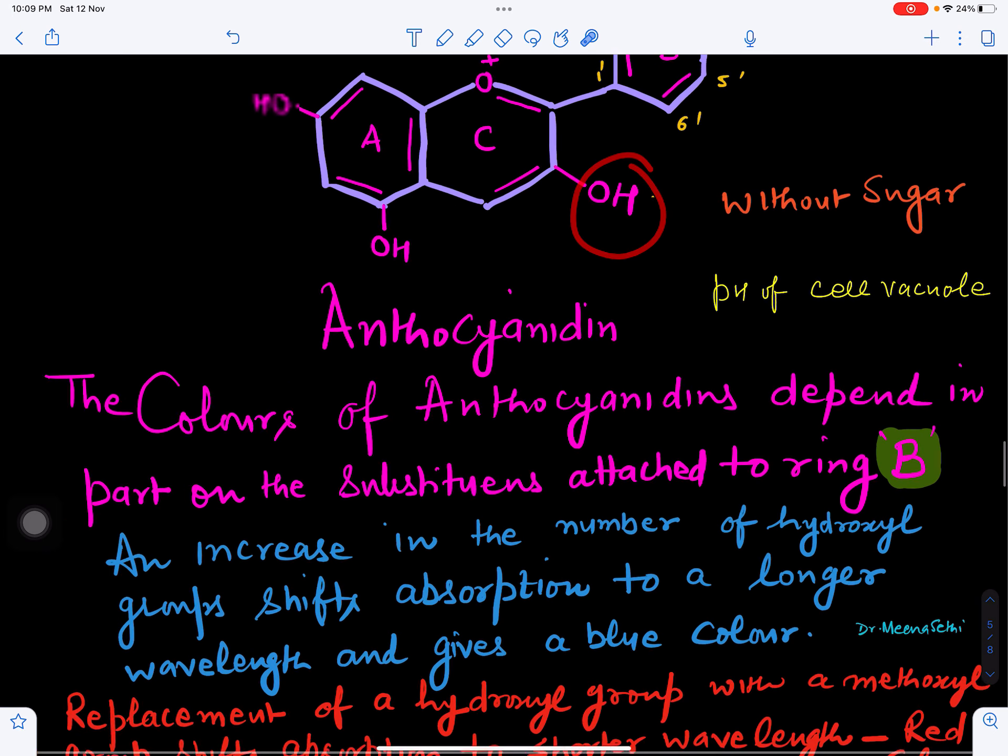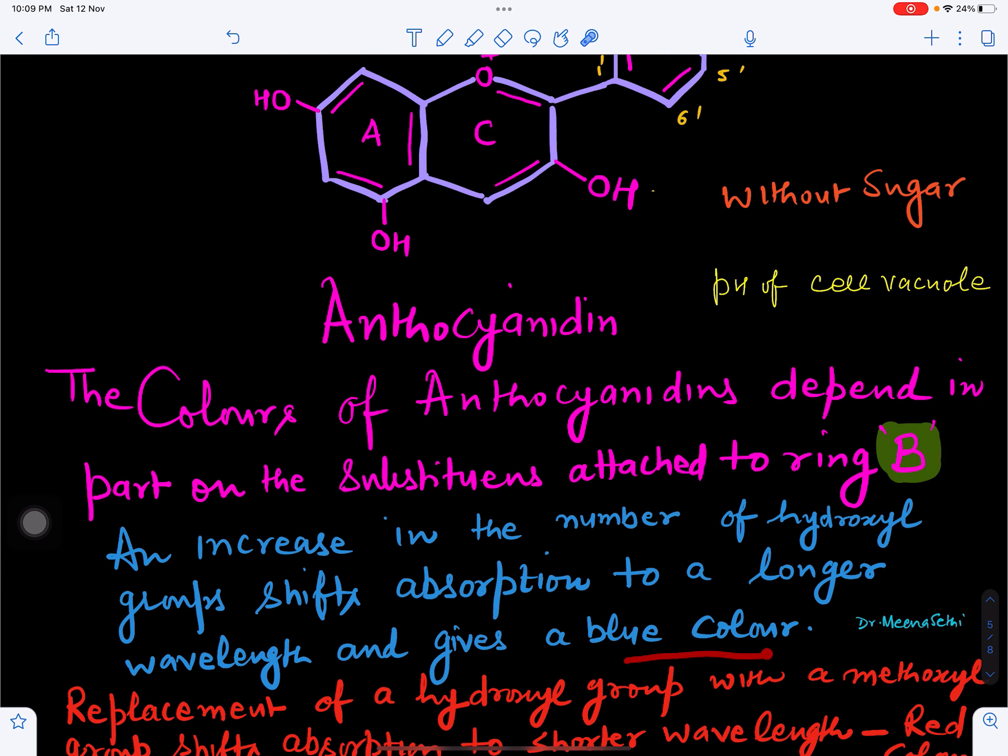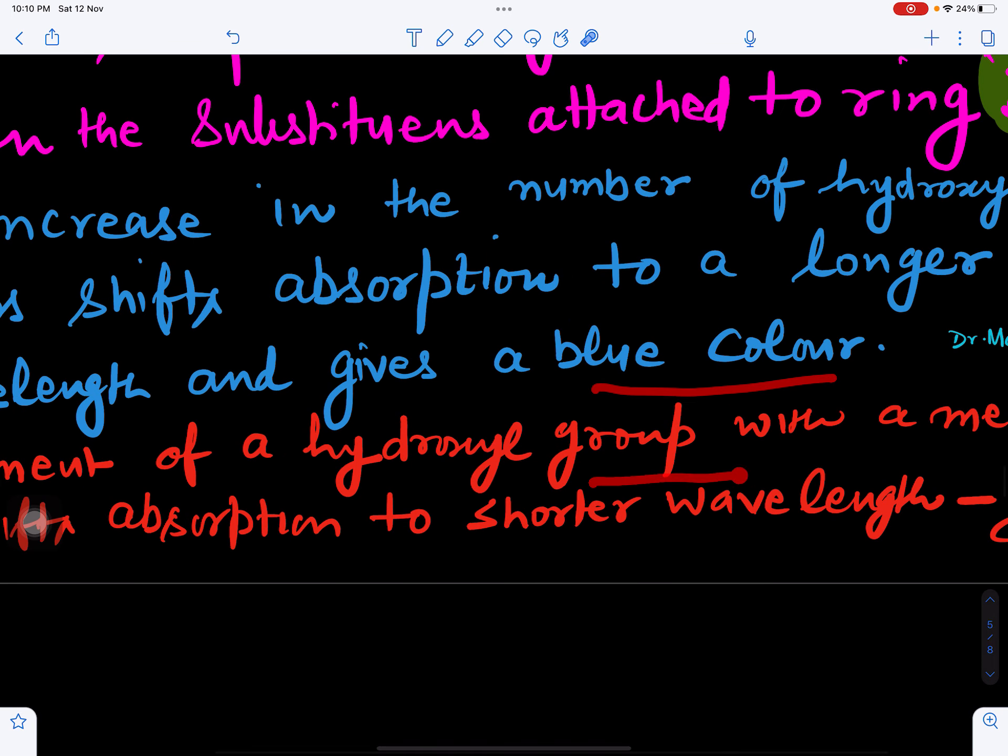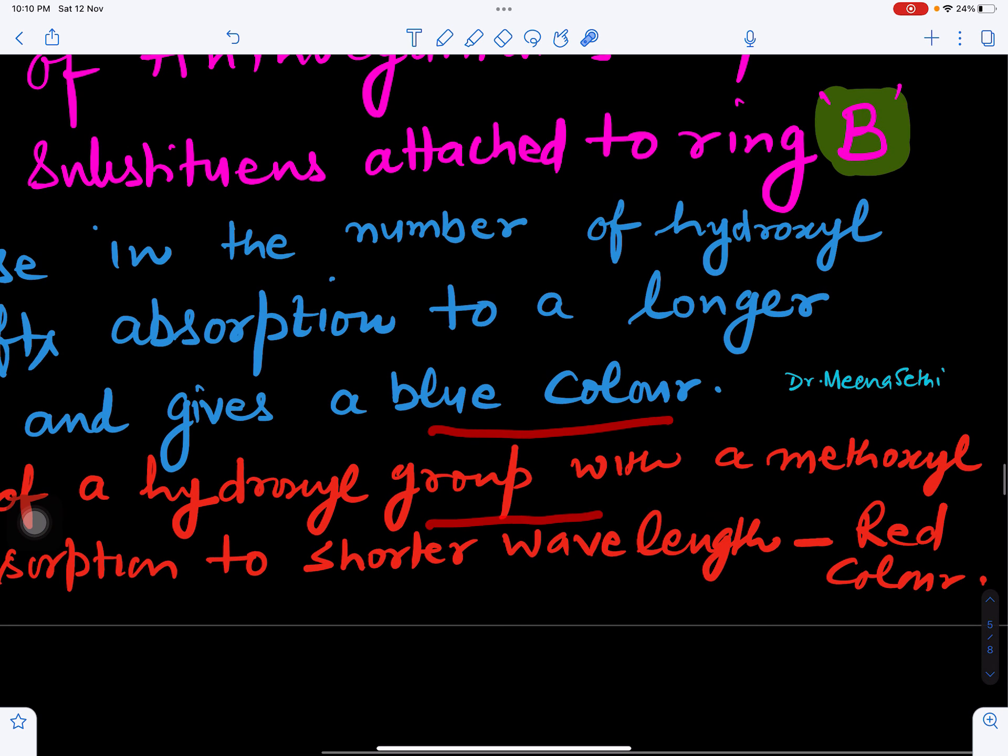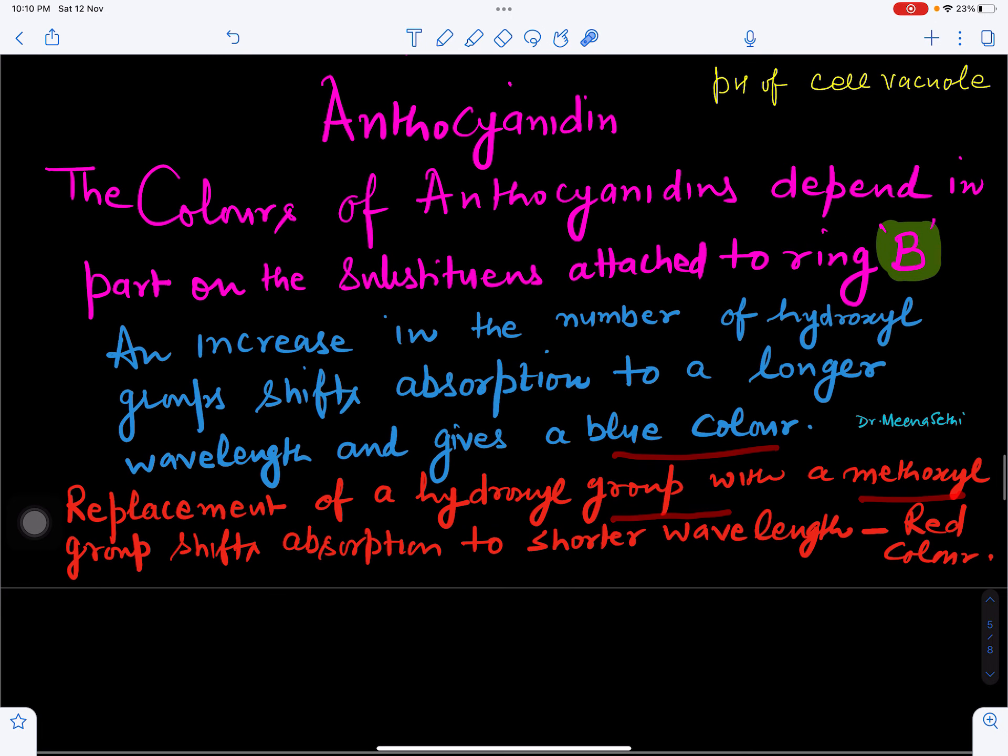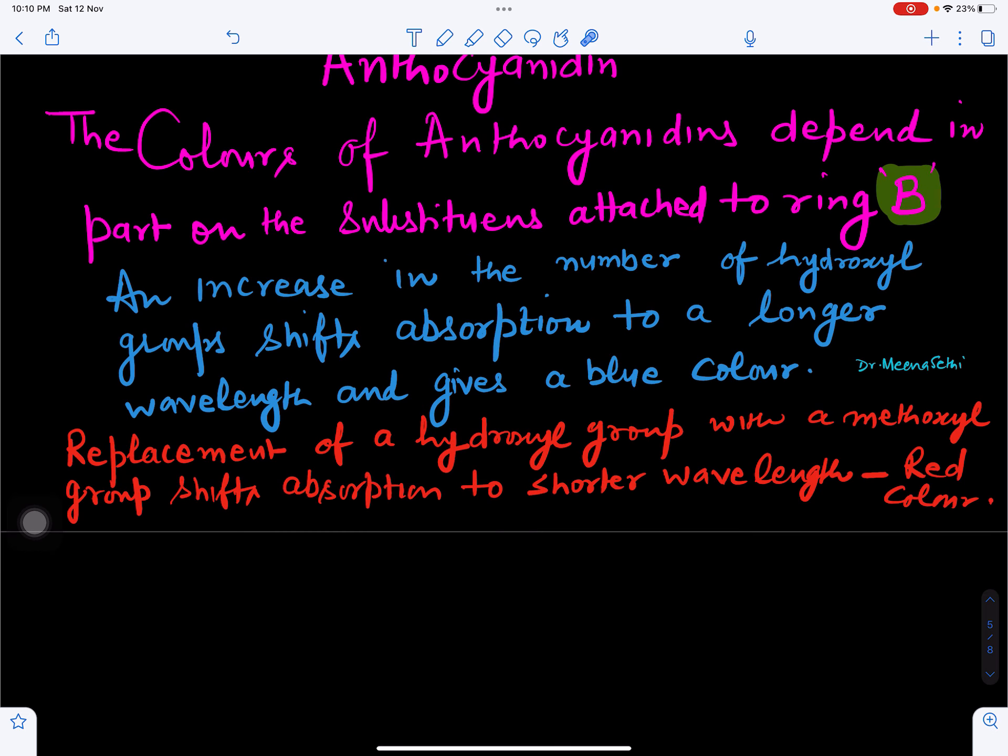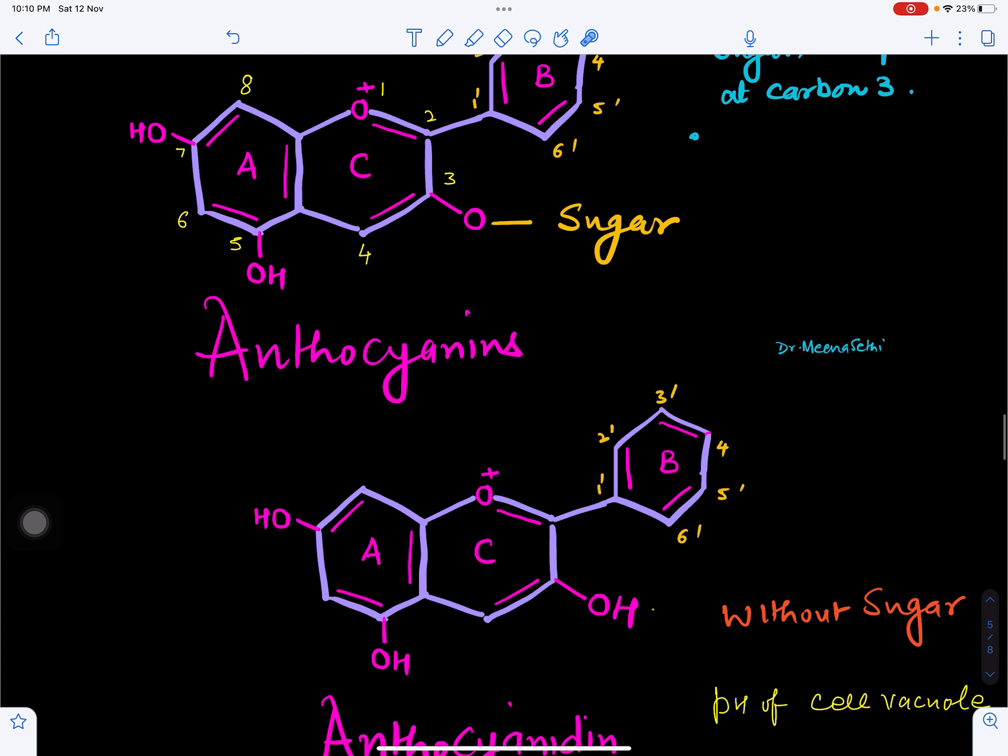If more hydroxyl groups are attached, the color will be blue because this will have a longer wavelength. If you see the light spectrum, longer wavelength will have less energy, shorter wavelength will have more energy. So longer wavelength will have blue color. If instead of hydroxyl group there is a methoxyl group, then light absorption will shift to a shorter wavelength and color will be red.